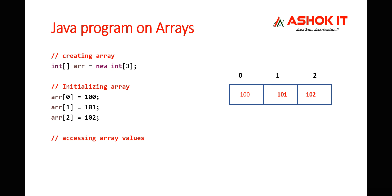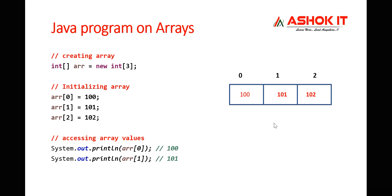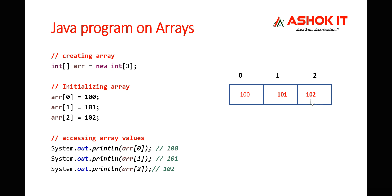To access values: arr[0] returns 100, arr[1] returns 101, arr[2] returns 102 — the values stored at those indexes. Like this we can create an array, initialize it, and retrieve values from it using index-based access.